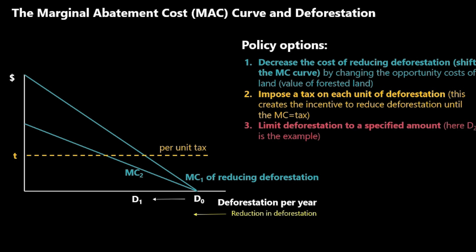Another policy option is to limit deforestation to a specified amount — for example, limiting it to D2. In this case, we're not concerned with the costs to the individual landholder. We simply tell them they have to reduce deforestation to D2; if not, they have to pay a fine.